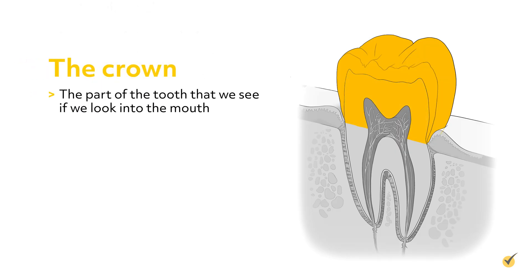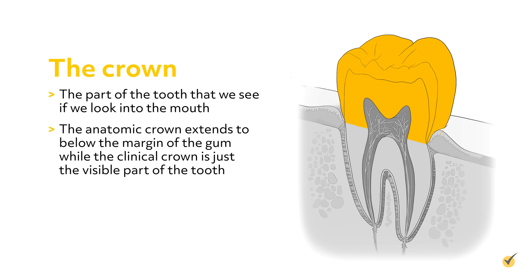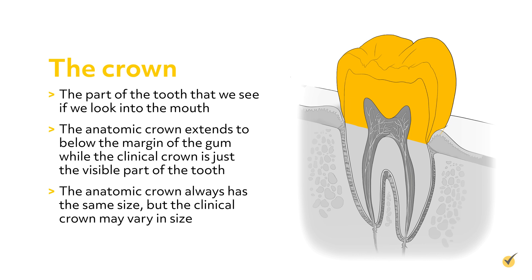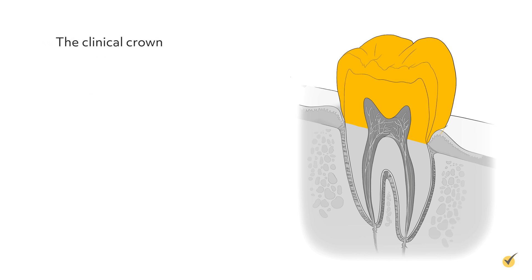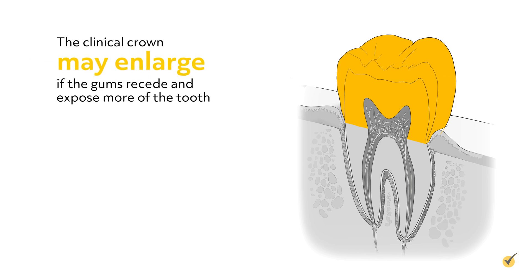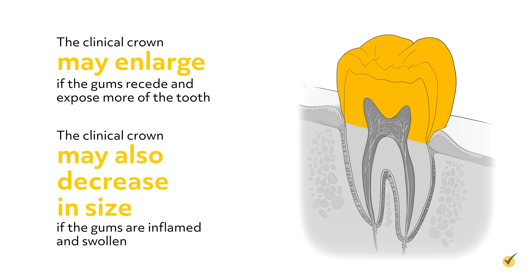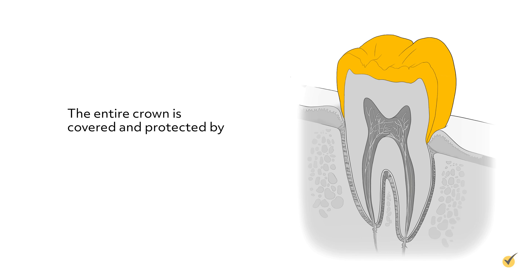The crown is the part of the tooth that we see if we look into the mouth. The anatomic crown extends to below the margin of the gum, while the clinical crown is just the visible part of the tooth. The anatomic crown always has the same size, but the clinical crown may vary — for example, it may enlarge if the gums recede and expose more of the tooth, or decrease in size if the gums are inflamed and swollen. The entire crown is covered and protected by a layer of enamel.